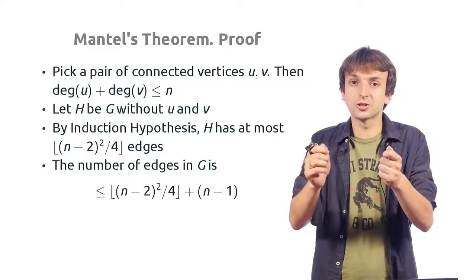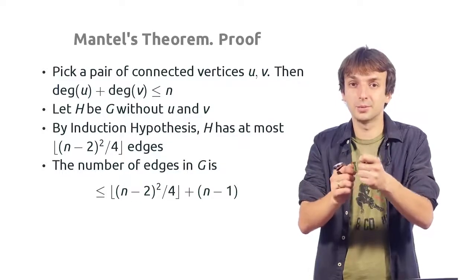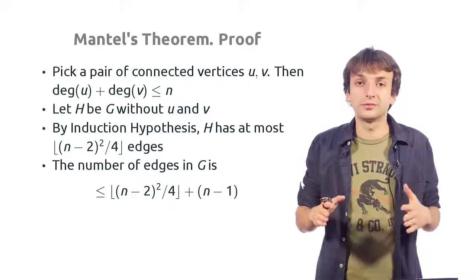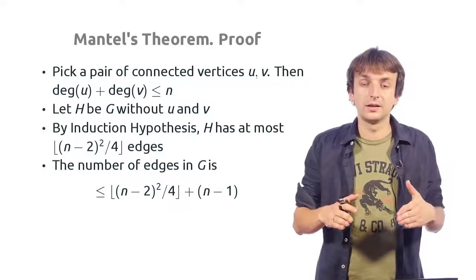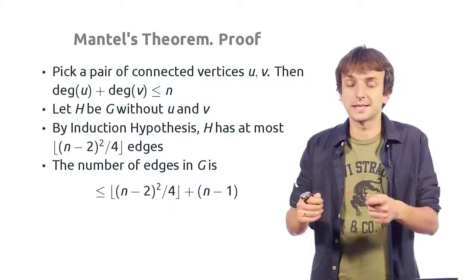But these two degrees count the edge between u and v twice. So, the actual number of edges that u and v have is at most n minus 1. So, the number of edges in G is upper bounded by the number of edges in H plus n minus 1.